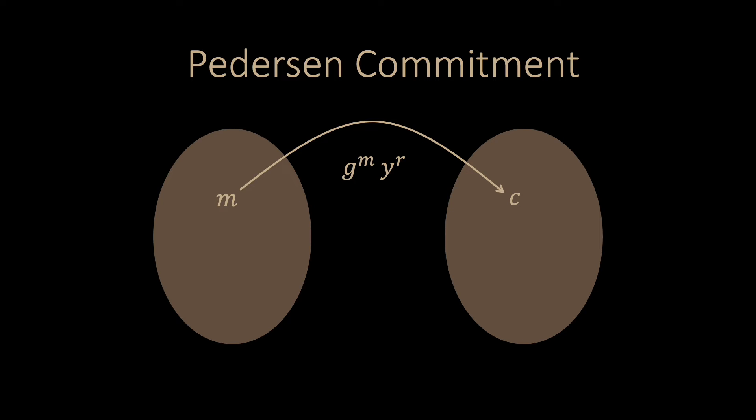After Watson reveals the message m and the random number r, Sherlock can redo the same computation and verify that the committed value is correct. So the protocol is correct.